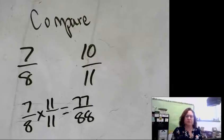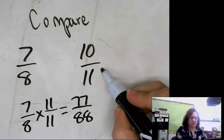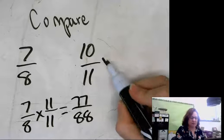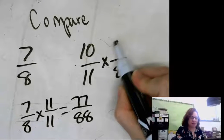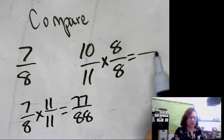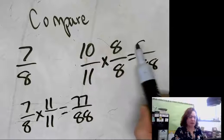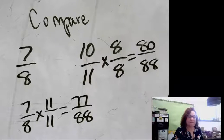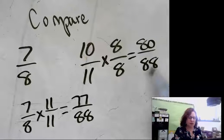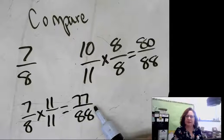And if I multiply 10 elevenths by 8 eighths, that gives me 80 over 88. So 80 over 88 is larger than 77 over 88.